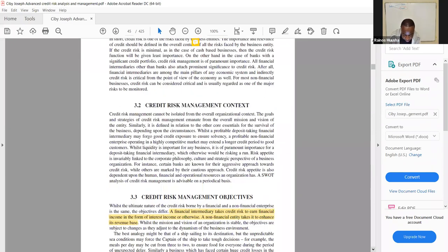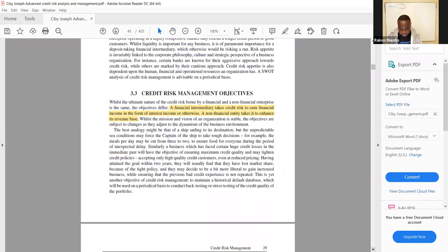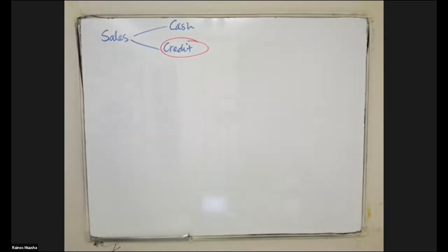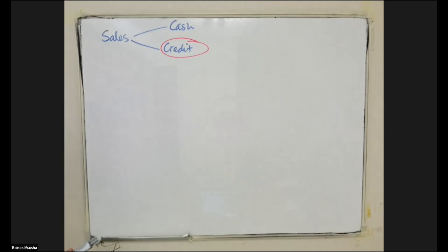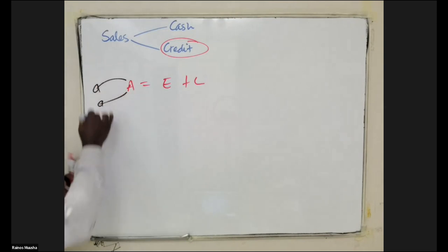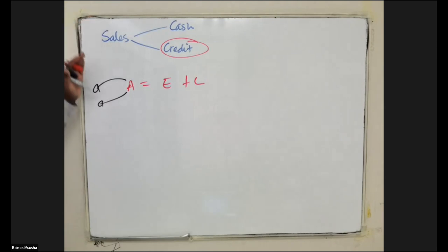On section 3.3 they look at credit risk management objectives. A financial intermediary takes credit risk to earn financial income in the form of interest income, whereas a non-financial entity takes it to enhance its revenue base. For a financial entity we look at the accounting equation — assets equal equity plus liability — so the credit risk is emanating from the credit assets they're investing in.